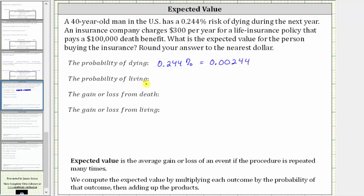Next we need the probability of living, which is going to be one minus the probability of dying, which is one minus 0.00244, which is equal to 0.99756.